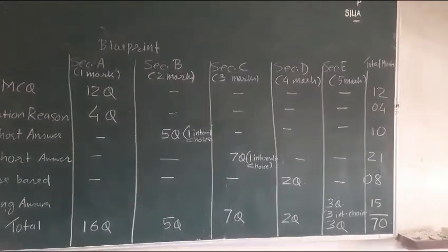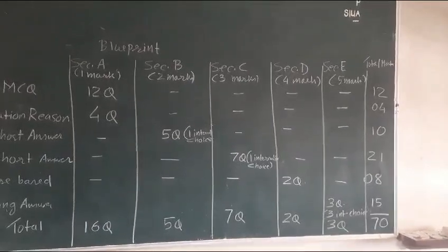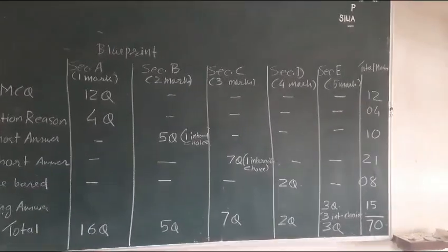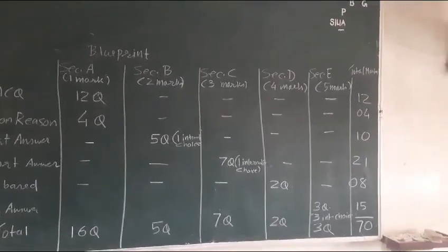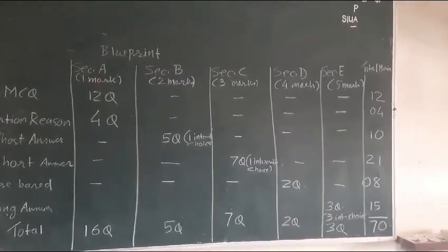Then Section B, 2 marks each, total 5 questions would be there. 1 internal choice will be there. Total 5 questions of 2 marks. Section C, 3 marks each. You see, 7 questions would be there. And total marks will be 21.